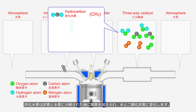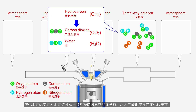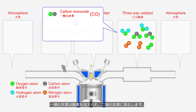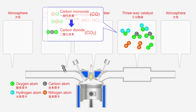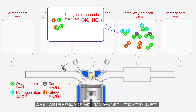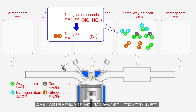Hydrocarbons are broken down into carbon and hydrogen, then combined with oxygen, transforming into water and carbon dioxide. Carbon monoxide combines with oxygen and transforms into carbon dioxide. After being deprived of oxygen, nitrogen compounds undergo a reaction where nitrogen atoms bond together to form nitrogen.